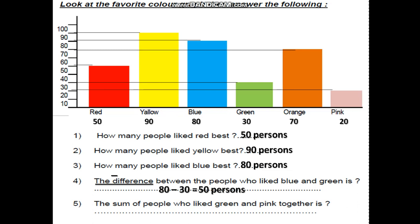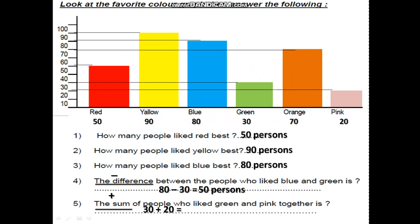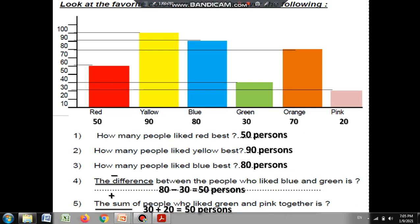The sum of people who like green and pink together. Sum, total, together, both, and all — these are the keywords for plus. So we will make green plus pink: 30 plus 20. Put the bigger number 30 in your mind and the smaller in your fingers. Open two fingers and count after 30 by tens: 40, 50. The answer is 50 persons.